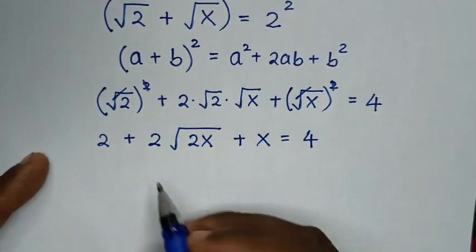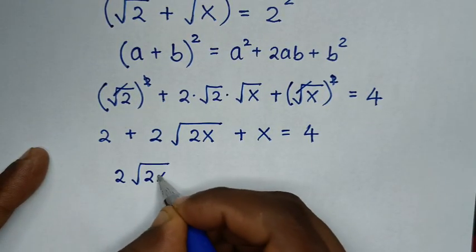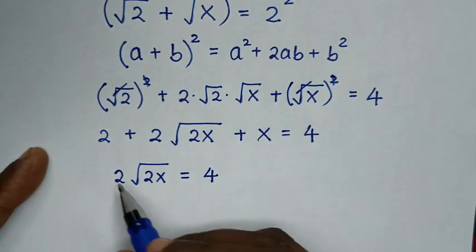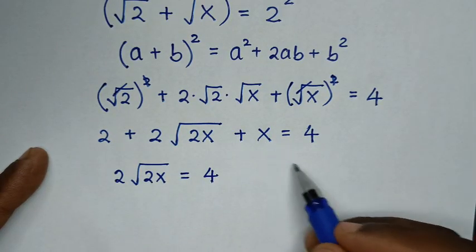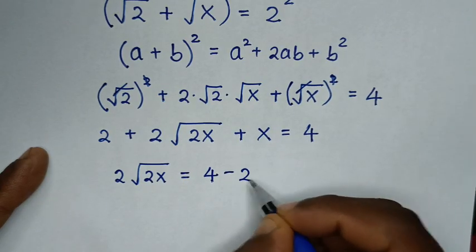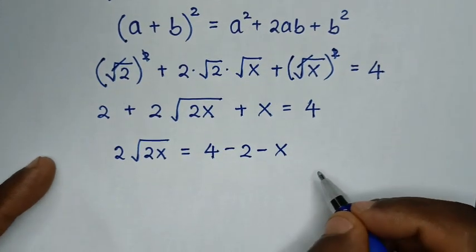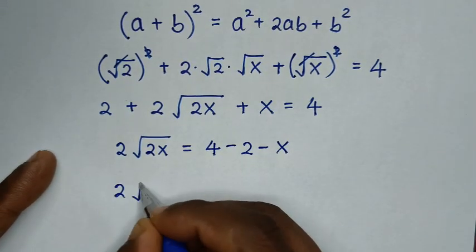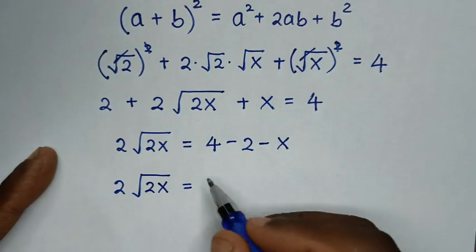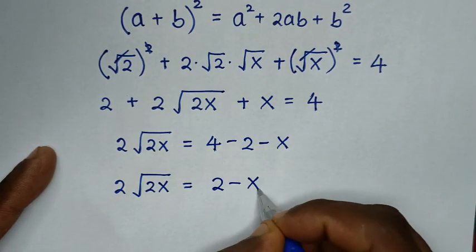In the next step, we isolate the radical term 2√(2x). We take 2 and x to the right side, so 2 becomes −2 and x becomes −x. Then: 2√(2x) = 4 − 2 − x, which gives 2√(2x) = 2 − x.